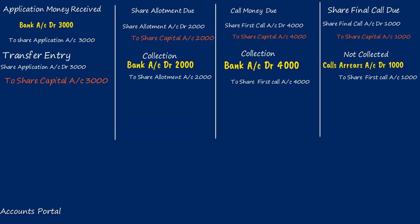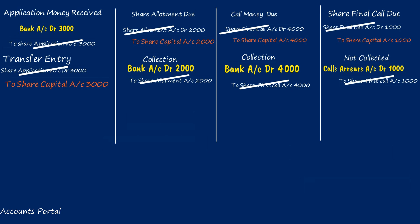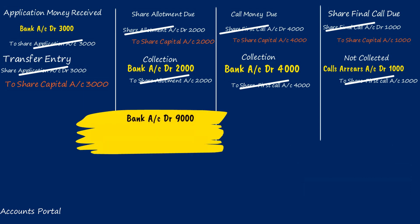After all these entries, let us check the net journal entry. If we merge all entries: share application, allotment, first call, and final call accounts cancel out. The net entry before forfeiture is: Bank account Dr. 9,000; Calls in Arrears account Dr. 1,000; to Share Capital account 10,000. We have not forfeited yet — we will forfeit now.